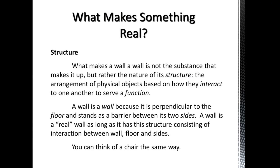It's the nature of the structure of that stuff in relation to something else. The wallness isn't in this object — it's in how it interacts with other things to serve a function. And without those other things, I would argue, it isn't really a wall. You can't have a wall unless it's perpendicular to a floor and standing as a barrier between two sides. Without that relationship — perpendicular to a floor, standing as a barrier between two sides — you don't really have a wall.